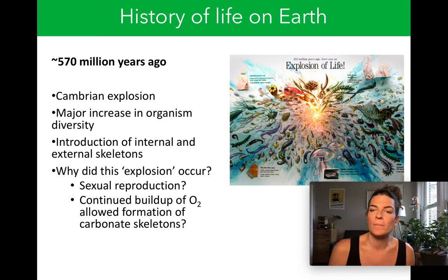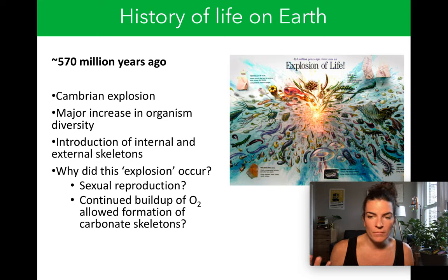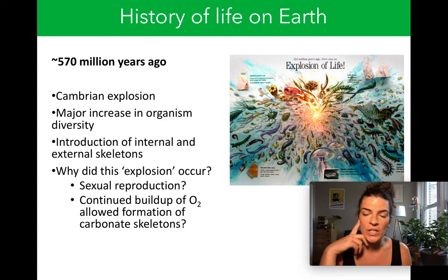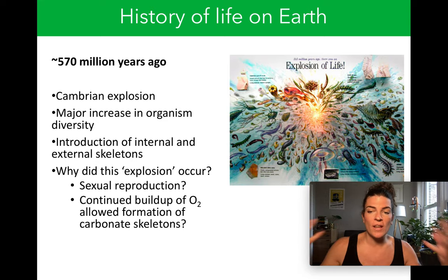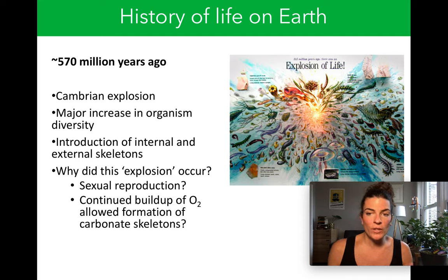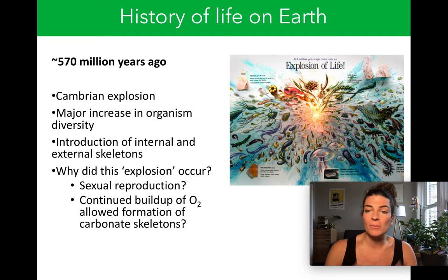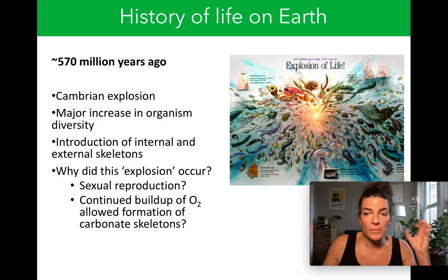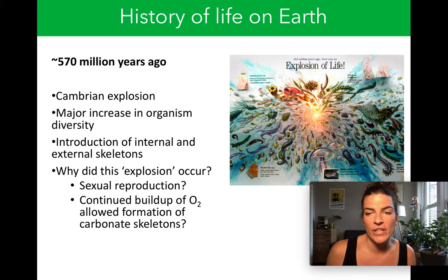So why did this explosion occur? There are some theories, but no definitive explanations as of yet. One really popular theory is that sexual reproduction is a much more efficient way of reproducing, and sexual reproduction during this time became a thing. This allowed for the diversification of animals and plants to accelerate. There was also a continued buildup of oxygen in the atmosphere and oceans through photosynthesizing organisms, which allowed for the formation of carbonate skeletons and protection from natural elements, leading to rapid diversification of animals.